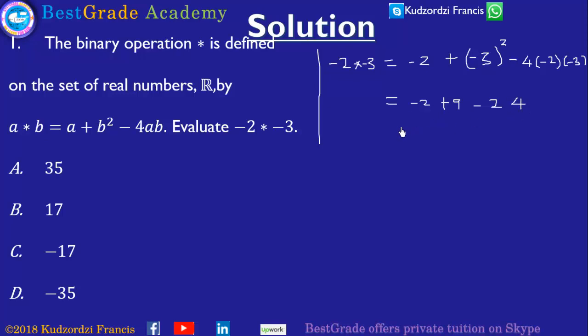This gives us 9 minus 26, which simplifies to negative 17. So the answer to question 1 is negative 17.